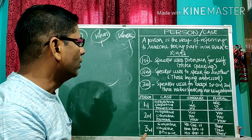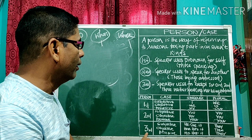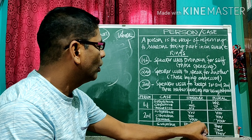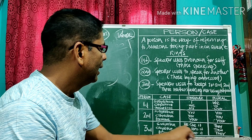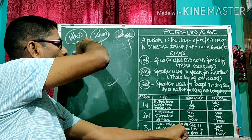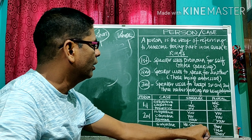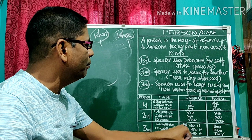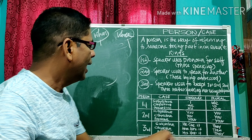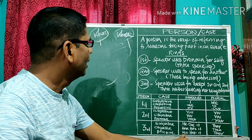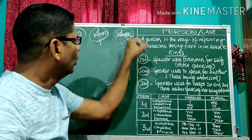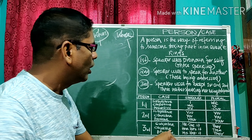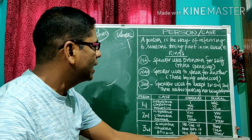In third person, the speaker uses pronouns other than first and second person. In subjective case: he, she, it. Who eats? He, she, or it. In objective case: him, her, it. 'He eats a mango; a mango is eaten by him.' In possessive case: his, her, its — answering the question whose.